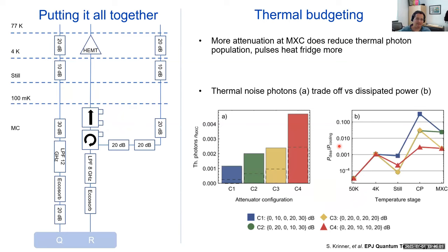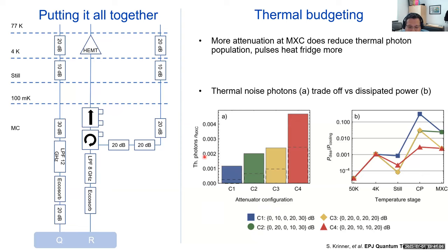Putting it all together: on the left is something one of my students is using to measure qubits in the fridge. Here's a qubit line just like I showed you before, and here's a readout line. We just drive the qubit and don't collect signals, so you see attenuator, attenuator, attenuator, low-pass filter, Ecosorb, more attenuators to clean up the light that drives the qubit. On the cavity side, working in reflection, you'll see an isolator letting signal only up and stopping back, and a circulator acting as a circulator. The Krinner paper will help you calculate: if you have 77K, 4K, still, 100 mK, mixing chamber stages, and put a certain pattern of attenuation — say 0, 10, 0, 20, 30 dB — you get a very low residual photon occupancy at the bottom of your fridge.